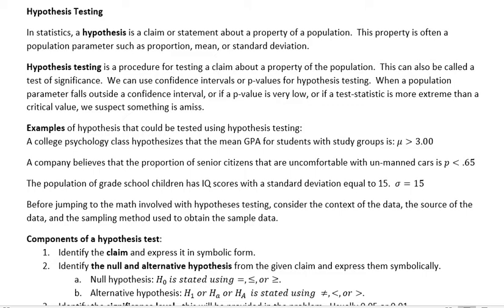Examples of hypotheses that could be tested: a college psychology class hypothesizes that the mean GPA for students with study groups is greater than 3.0 — since we're talking about mean, we're using mu. A company believes that the proportion of senior citizens that are comfortable with unmanned cars is less than 0.65 — that's a proportion using p.